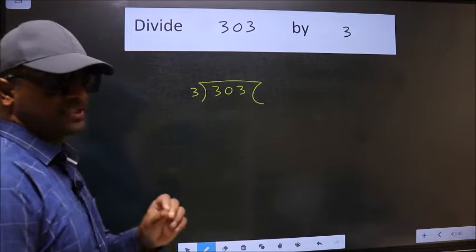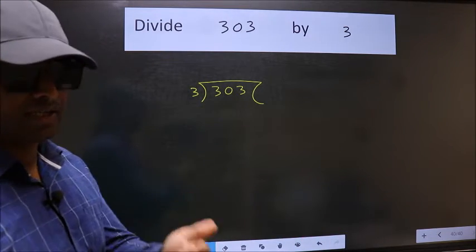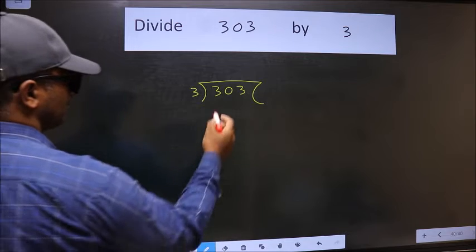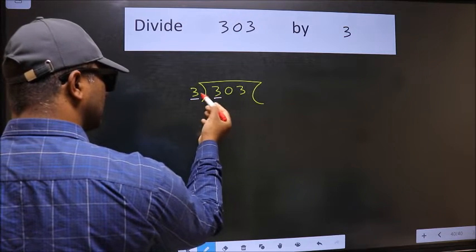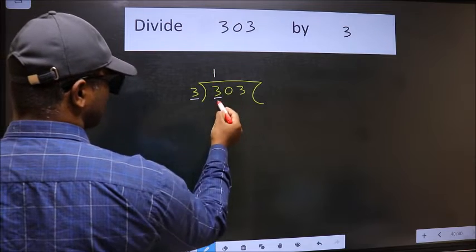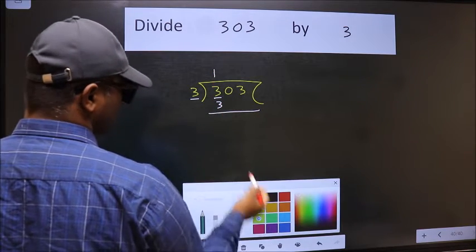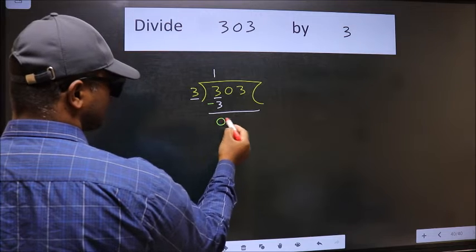This is your step 1. Next, here we have 3. Here also 3. When do we get 3 in the 3 table? 3 once 3. Now we should subtract. We get 0.